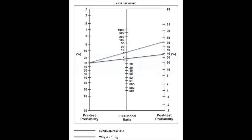Now let's jump to the bottom of the second page of the handout to this scenario example. You will see a chart that contains the likelihood ratios of clinical findings for the diagnosis of osteoporosis in a single patient. The general prevalence rate for the diagnosis of osteoporosis is 30%, meaning the pre-test probability of a patient going to see their physician for this diagnosis is 30%. The blue line represents the weight test and the green line represents the hand-skin fold test.